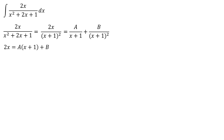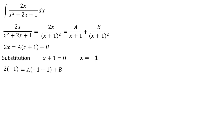Next, substitution: x plus 1 equals zero, or x equals negative 1. This shows that 2 times negative 1 equals A times (negative 1 plus 1) plus B, or negative 2 equals A times 0 plus B, so B equals negative 2.